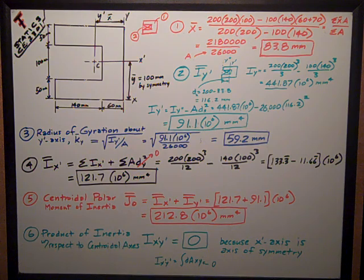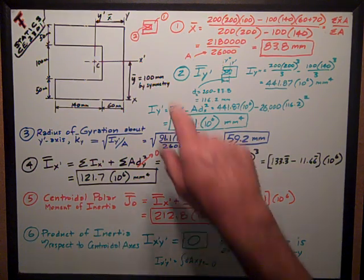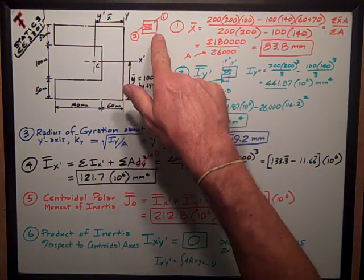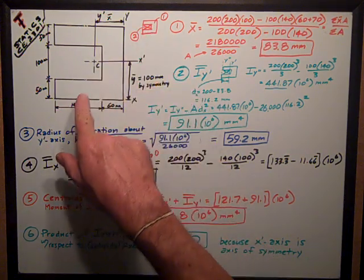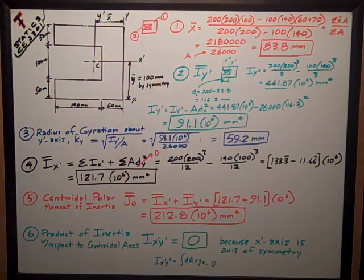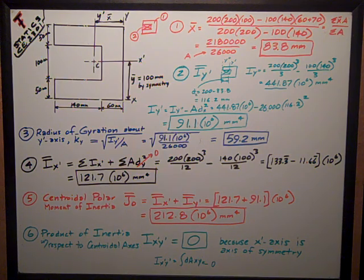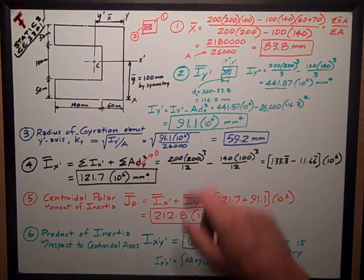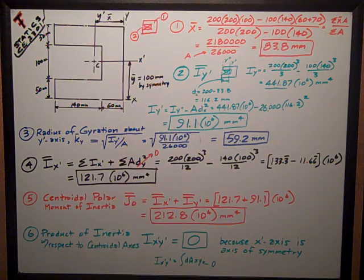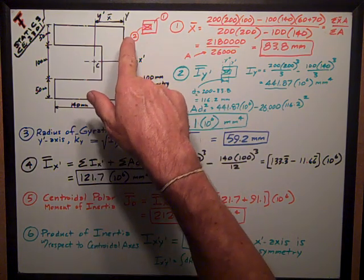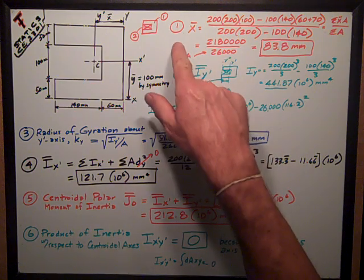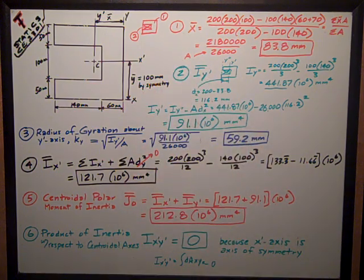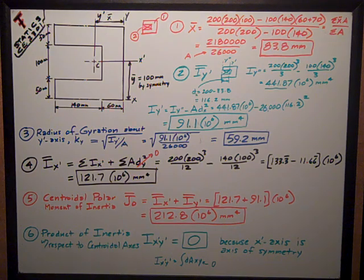So for my calculations, there's many ways to skin a cat. I'm going to use a big square 200 by 200 with a cutout that's 140 by 100, those two areas. The first thing I'm asked for is the centroidal x-bar distance from the y-axis to the centroidal axis y-prime. Instead of just doing a chart, I've just got two areas to work with. So I'm just going to do it this way.